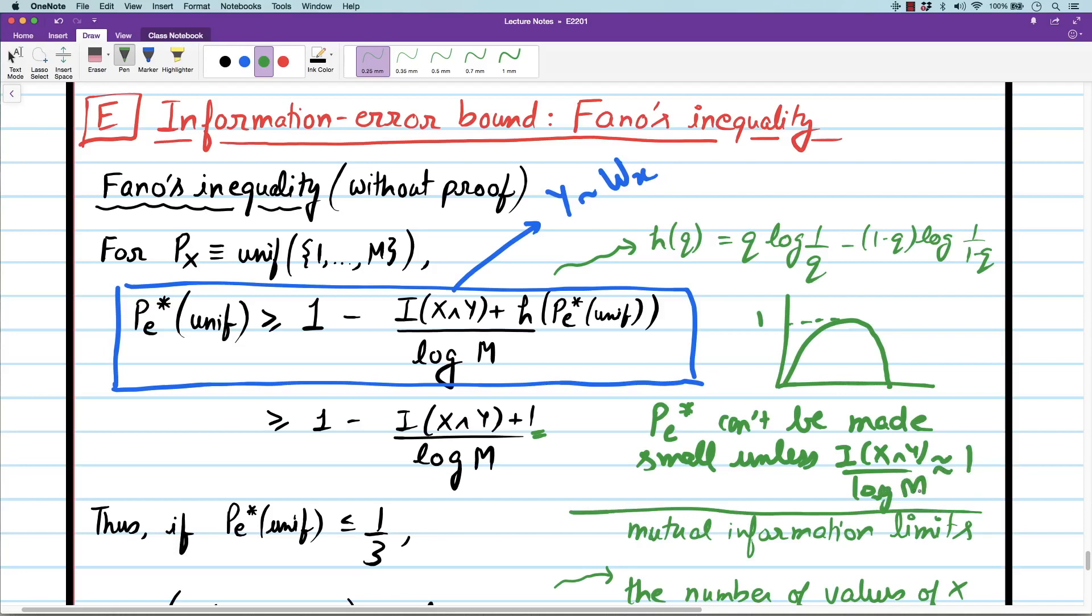Number of hypotheses that you can distinguish, log M, is approximately mutual information. For given M, unless mutual information is large, you cannot make probability of error small. This is that connection. It relates probability of error to mutual information. Unless mutual information is large, you can't make probability of error small.